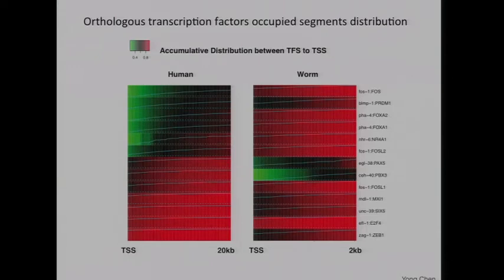For completeness, we also compared humans and worms. The promoter-loving factors in humans are sometimes promoter-loving in worms, and sometimes not, and this held whether we used a 20 KB or 2 KB window. So the conclusion is that orthologous factors often bind the same motifs across species, but they're not necessarily in the same general locations across different organisms.